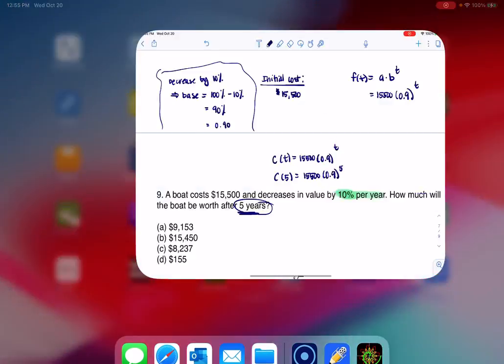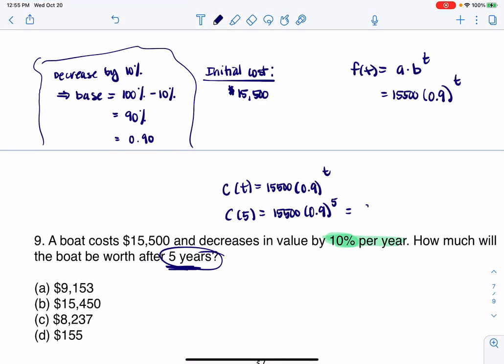Let me write that down: $9,152.60. It looks like they've rounded these answer choices, so I'll round this to $9,153. Answer A is correct. Thanks so much, everyone.